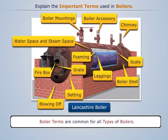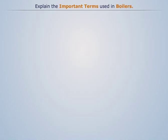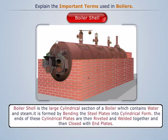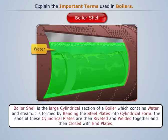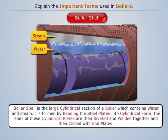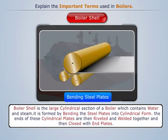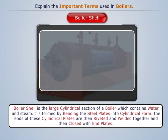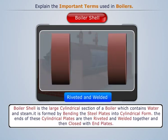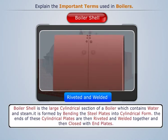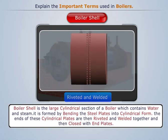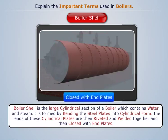Boiler shell: it is the large cylindrical section of a boiler which contains water and steam. It is constructed by bending steel plates into cylindrical form. The ends of these cylindrical plates are then riveted and welded together and then closed with end plates.